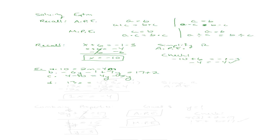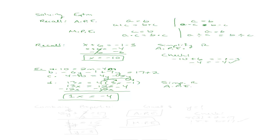I'll do one for you: 13x equals 4 times the quantity 3x minus 1. I'm going to start by simplifying the right side using the distributive property, which gives me 12x minus 4. Now I need to solve for x. I have x's on both sides, so I'll use the addition property of equality and subtract 12x from both sides — the 12x's cancel out, leaving me with 13x minus 12x, which gives 1x equals negative 4. So x equals negative 4.